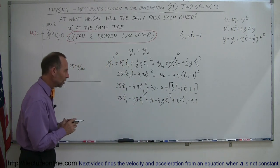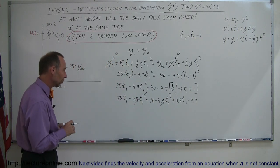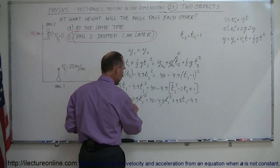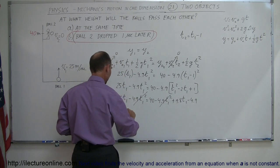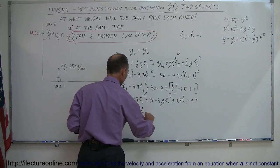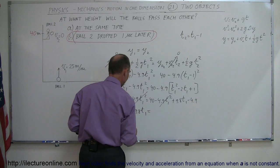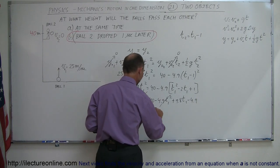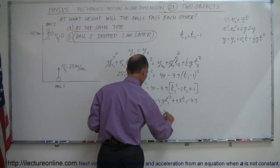So now we only have an equation in the first order. We have 25t1 minus 9.8 t1, bringing that over. Remember when you cross the equal sign, the sign changes. And here we have 40 minus 4.9.